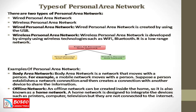The examples of personal area networks are body area network and offline network. The body area network is a network that moves with a person, and the offline network can be created inside the home, so it is also known as a home network.